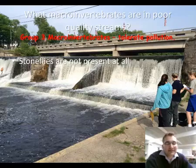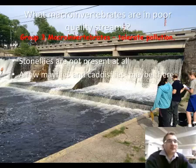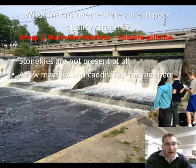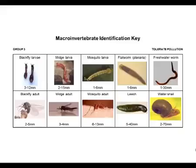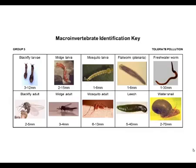Group 3 macroinvertebrates all tolerate pollution. Stoneflies are not present at all in a Group 3 stream — most have died off due to pollution. There are a few mayflies and caddisflies that may be found, but the overall population will be minimal. Most organisms found are soft-bodied animals: fly larvae, leeches, and planaria — examples of roundworm and tapeworm may be found there — as well as some amphipods, which are fast-moving shrimp-looking creatures. If we find large populations of these pollution-tolerant macroinvertebrates, we can conclude that the overall stream health is probably not fantastic.